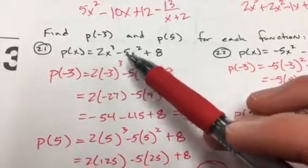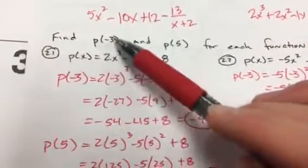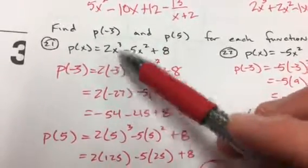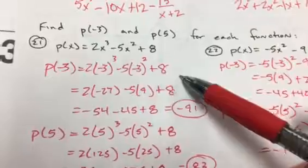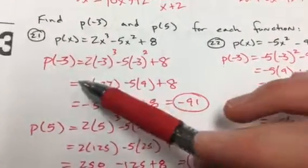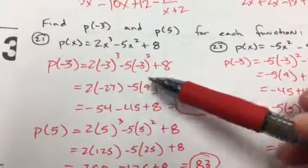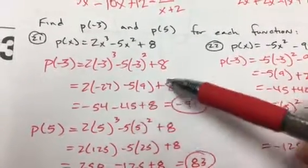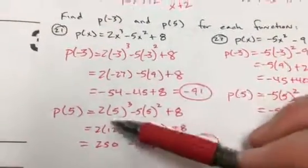In order to save some time, what you're doing is just plugging negative 3 in for x — this is a review from chapter 1. Plug negative 3 in for x everywhere you see it: cube negative 3 to get negative 27, double it to get negative 54. Negative 3 squared is positive 9, negative 5 times 9 gives you negative 45, add 8 to it — that's how you get 91.